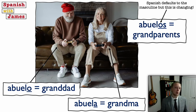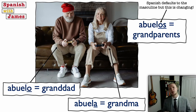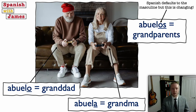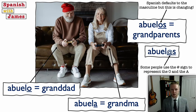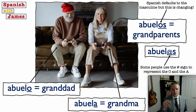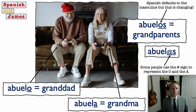If I say mis abuelas, I'm talking about just my grandmothers. The masculine is sometimes used in Spanish to talk about a group that has men and women in it, as is the case with grandparents. Some people have tried to make Spanish less sexist by using the at sign — in Spanish it's called la arroba — because people think of it as an A inside an O, representing both the masculine O and feminine A endings.